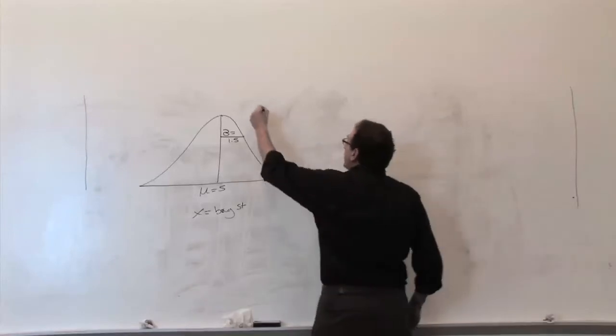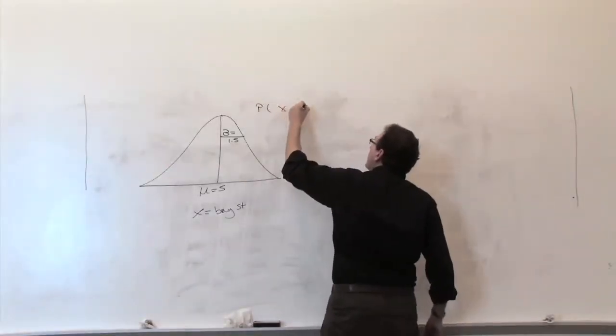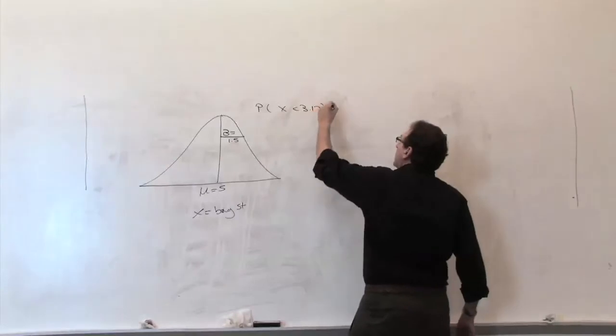That variation is quantified at 1.5. And the question is, how many bags are going to be below 3.17? That's the question.